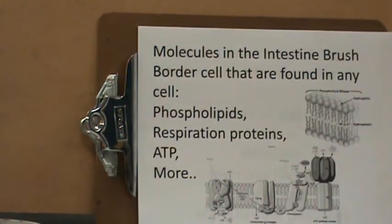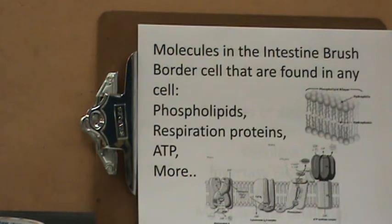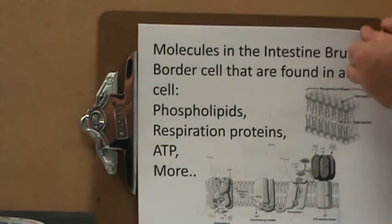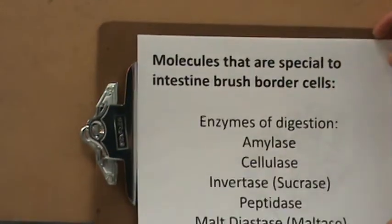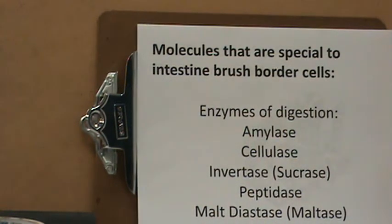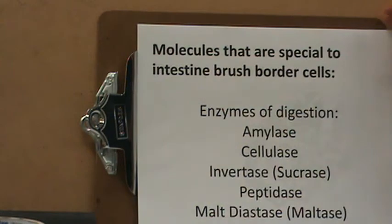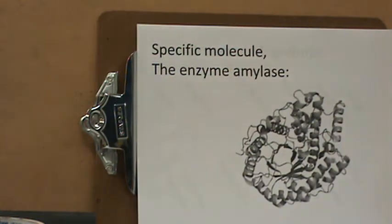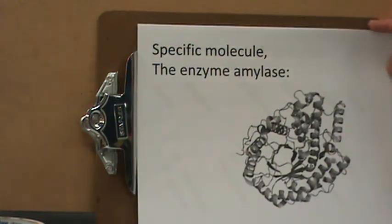Molecules in the intestinal brush border cell that are found in any cell include phospholipids, respiration proteins, ATP, and many more. Molecules special to intestinal brush border cells are enzymes of digestion: amylase, cellulase, invertase that breaks down sugar, peptidase that breaks down small proteins, and maltase which also breaks down small carbohydrates. A specific example molecule is the enzyme amylase, which is a protein.